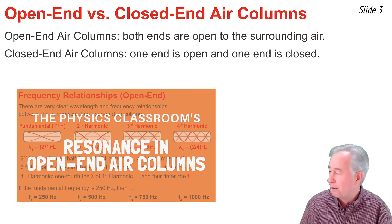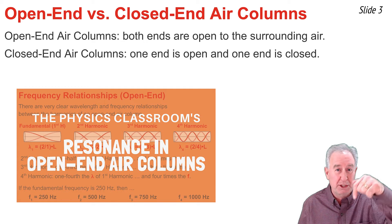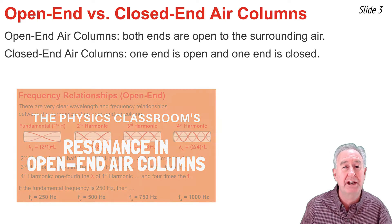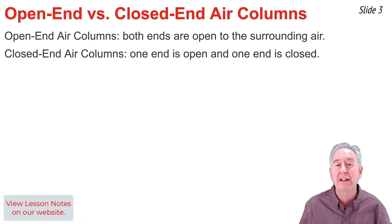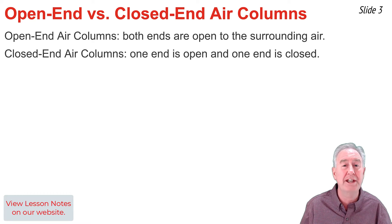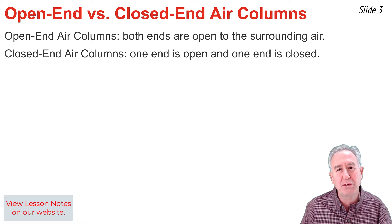In a previous video I discussed open-end air columns, and I've left a link to that video in the description section if you need to review it. In this video I'll be discussing closed-end air columns, but before I do, let's do a quick discussion of the differences between an open and a closed-end air column. An air column refers to a column of air, usually inside a tube, pipe, or musical instrument, that can be forced to vibrate at one of its natural frequencies and thus produce a loud sound. There are two types of air columns: open and closed-end.